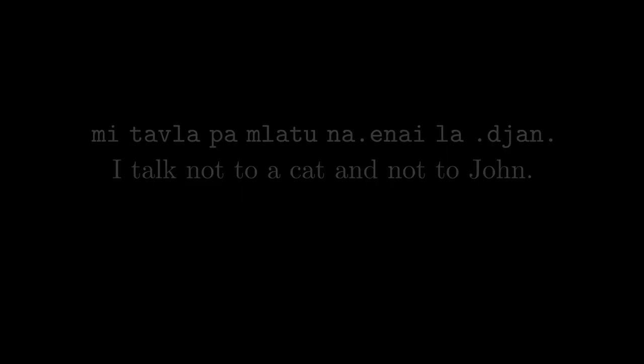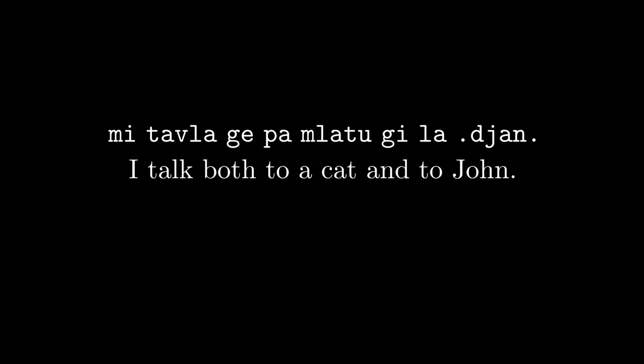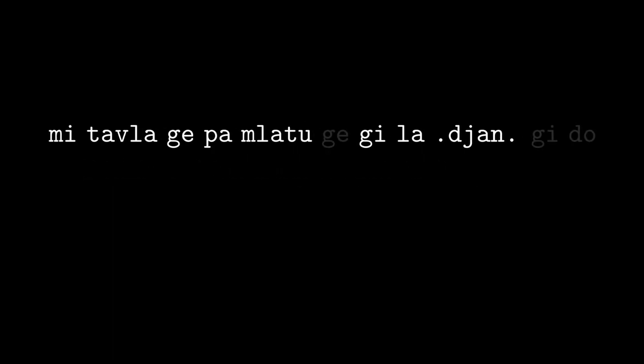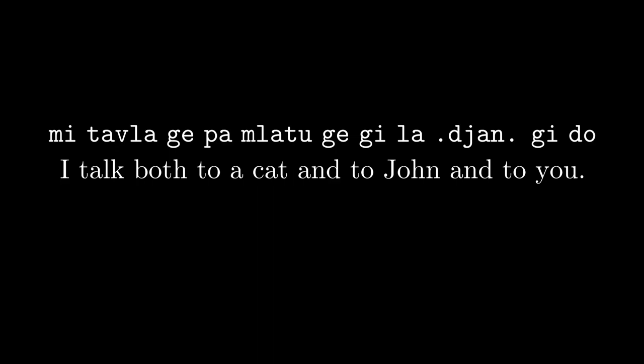With forethought connectives, we would have: 'mi tavla ge pa mlatu gi la .djan.' — I talk both to a cat and to John. For sumti, the forethought shmavo is 'g' plus the vowel for the connective, and 'gi' is the separator. But connectives only connect two sumti, so you can't just add 'gi do' to add 'you'. You'd need something like: 'mi tavla ge pa mlatu ge gi la .djan. gi do' — I talk to both a cat and both to John and to you, which means the same as talking to a cat, to John, and to you.